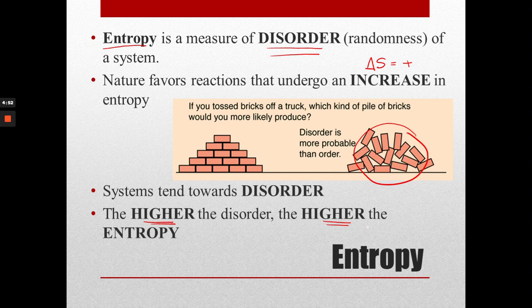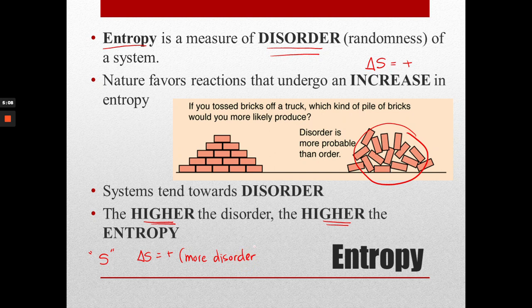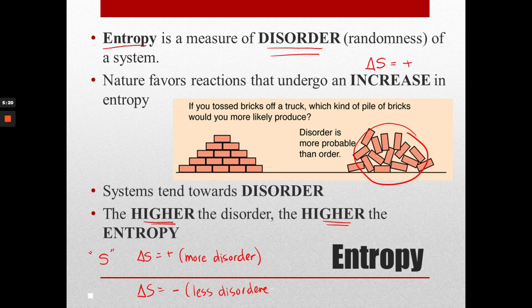So there's a lot going on here. It's a really cool idea. The symbol is S. And if it is positive, if the change in entropy is positive, that means that it has become more disordered and random. If it is negative, it means that it has become less disordered or more orderly.